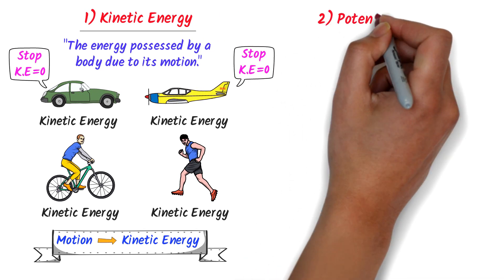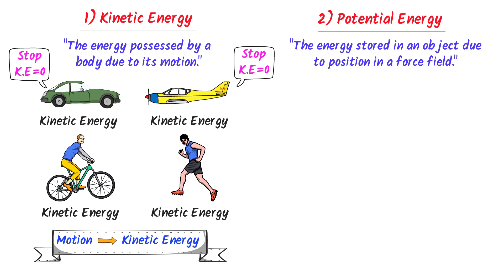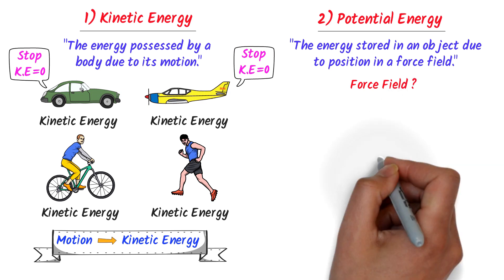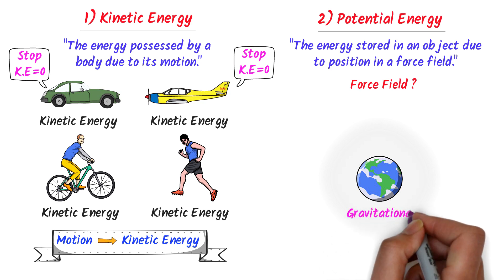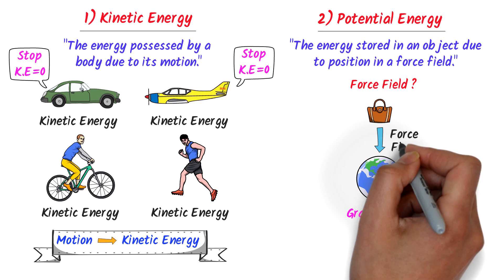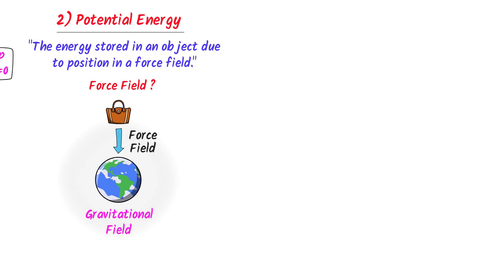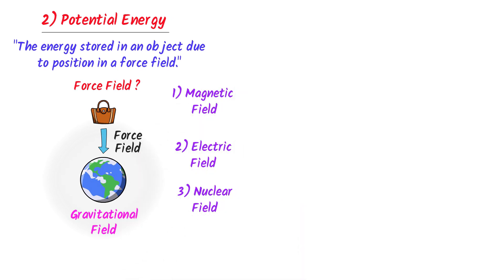The second form of energy is potential energy. The energy stored in an object due to its position in a force field is called potential energy. To learn potential energy, you must learn the concept of force field. For example, consider the earth. We all know that there is a gravitational field around the earth. If we place any object in this field, it experiences a downward force. That's why things fall in a downward direction. So we say that the gravitational field is a force field. Some other force fields are magnetic field, electric field, nuclear field, etc.